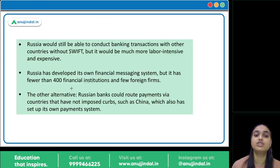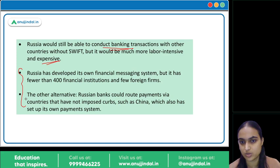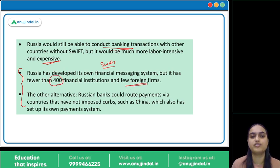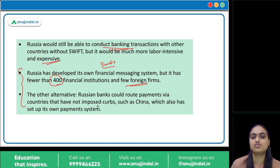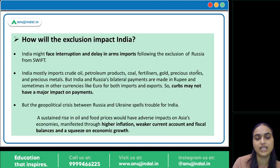Russia does have its own financial messaging system, but it is limited to only 400 institutions and few foreign firms. Russia could route its payments through countries where these curbs are not imposed, like China, but all such alternative steps will be more expensive for Russia. It is still highly dependent on SWIFT.